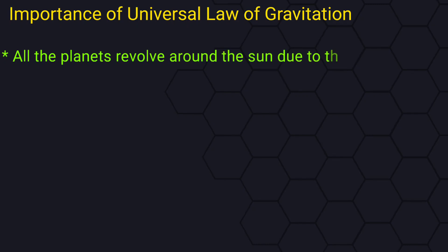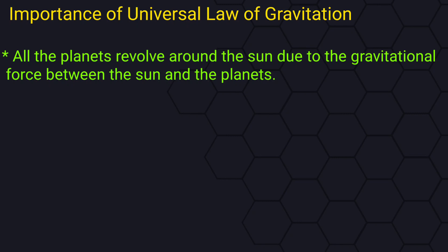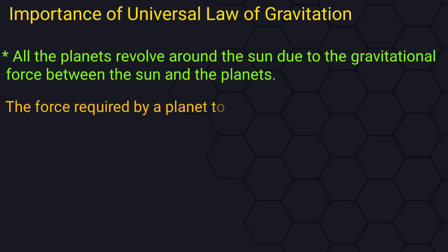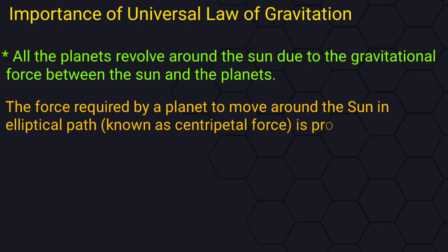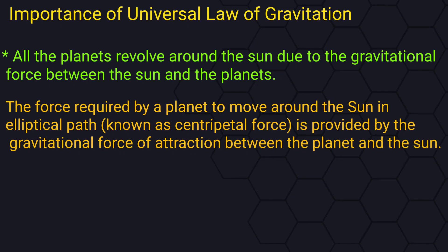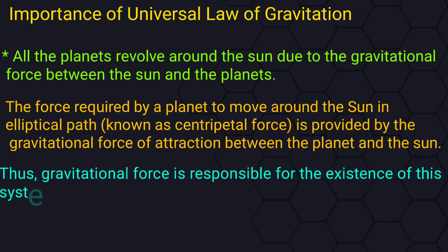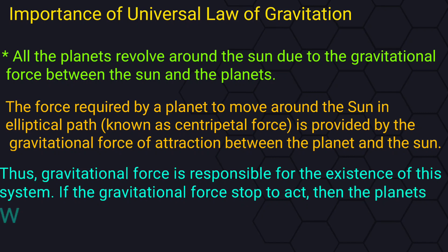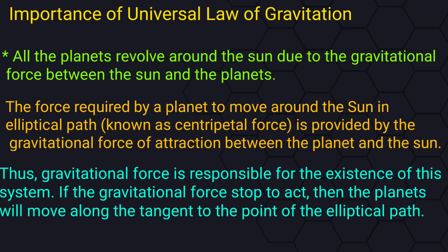All the planets revolve around the Sun due to the gravitational force between the Sun and the planets. The centripetal force required by a planet to move around the Sun in an elliptical path is provided by the gravitational force of attraction between the planet and the Sun. Thus gravitational force is responsible for the existence of the solar system. If gravitational force were to stop acting, the planet would move along the tangent to the elliptical path.